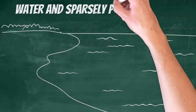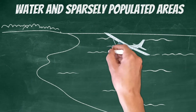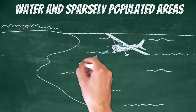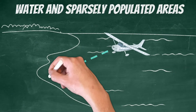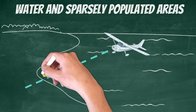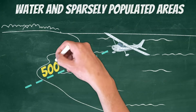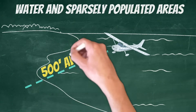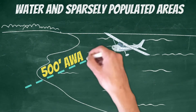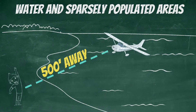Here's something crazy though — over water and sparsely populated areas, you can fly your airplane as low as you want. You just can't get any closer than 500 feet to any person, vessel, vehicle, or structure.